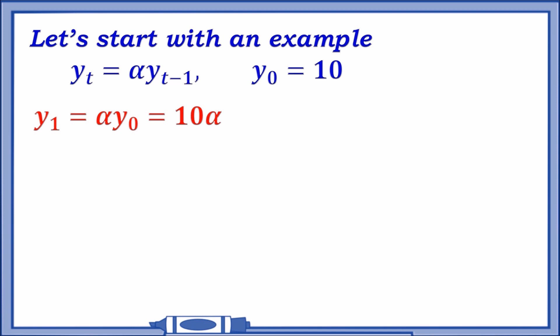Great. What happens if we try t equals 2? Well, we will get y_2 equals alpha times y_1. And notice we can actually substitute the y_1 value, y_1 solution which was 10 alpha into that equation. So we'll get alpha times 10 alpha, which presents us with 10 alpha squared. Seems nice.